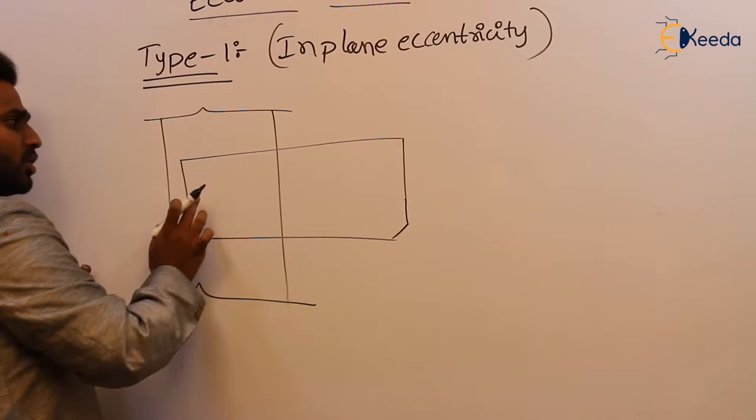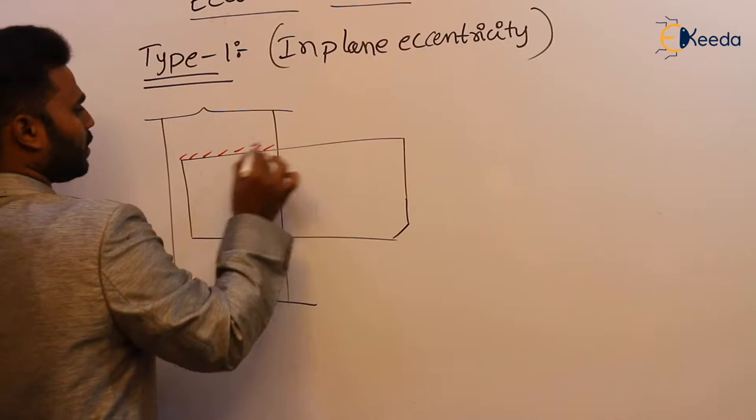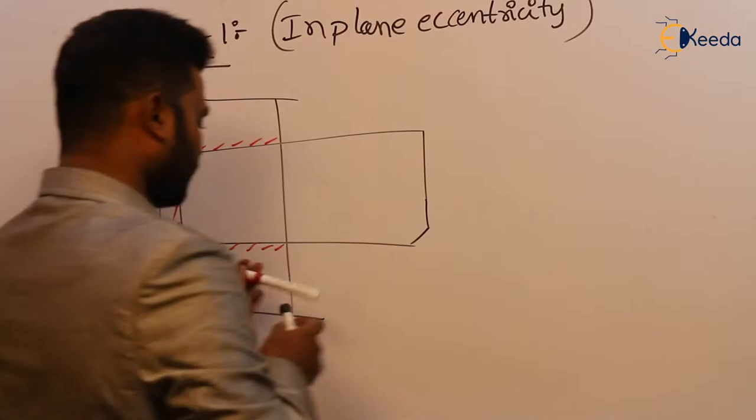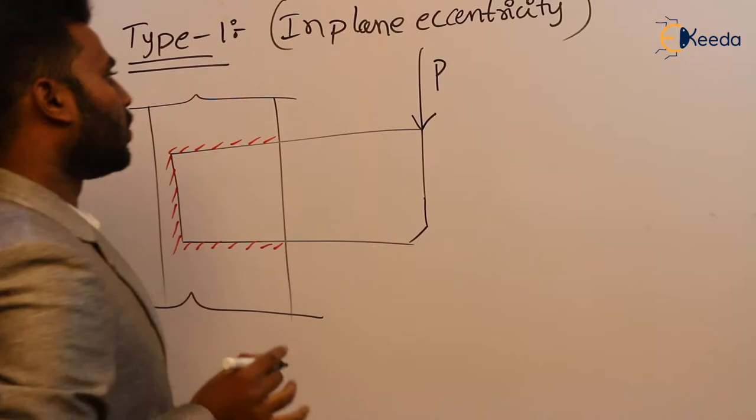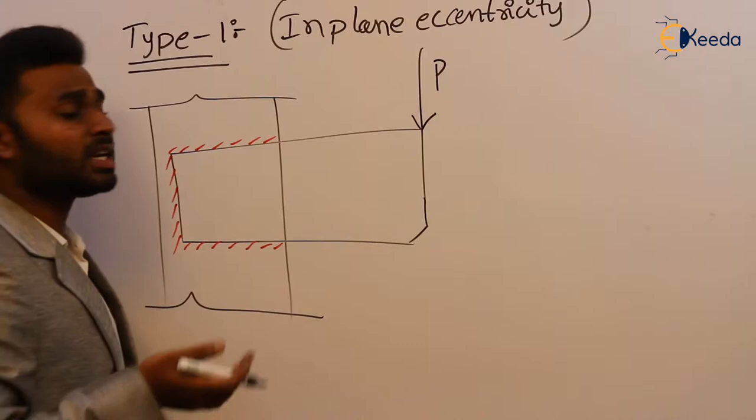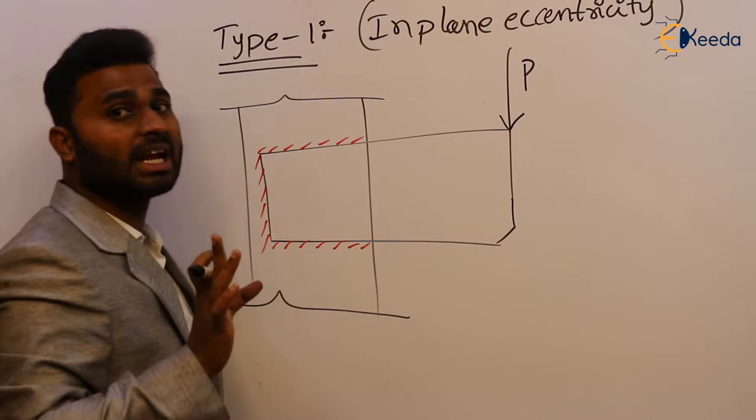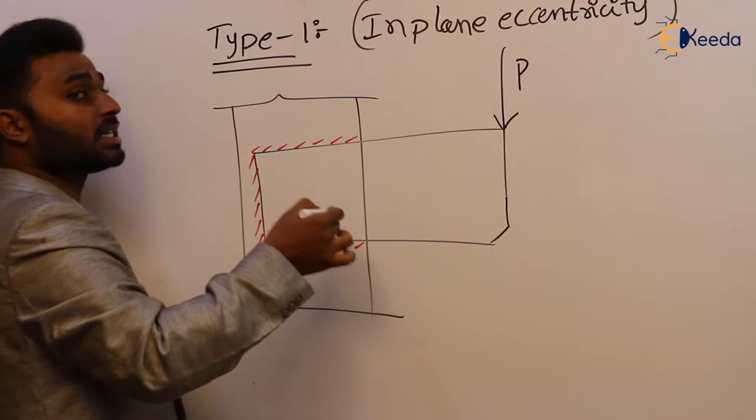If we see the diagram, this bracket is connected to the flange of a column by using a weld. Here, we don't have eccentricity directly — eccentricity is the distance between the CG of the connection and the load.